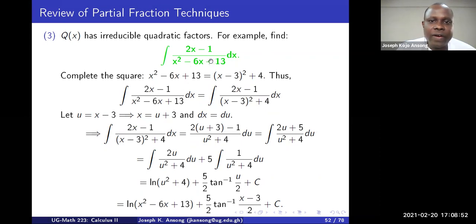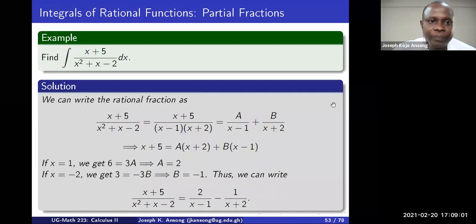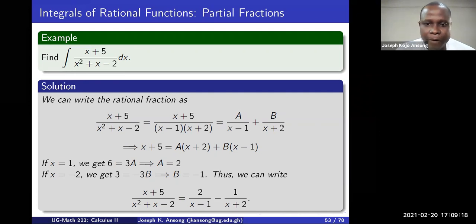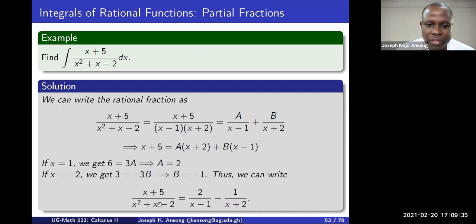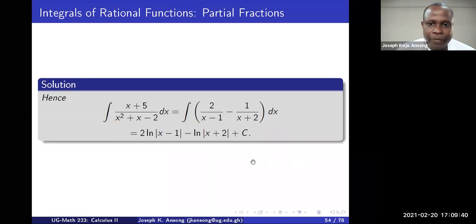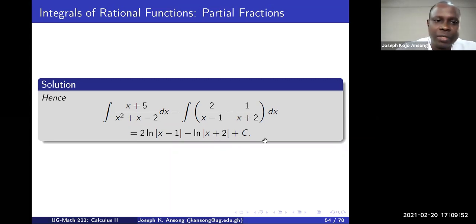If you have irreducible quadratic factors at the denominator, just complete the square and make a substitution. Let's try a simpler example: the denominator has factors (x - 2) and (x + 2), so write it as A over (x - 1) plus B over (x + 2). Multiply through by the denominator and solve — you get A = 2 and B = -1. So the expression becomes 2 over (x - 1) minus 1 over (x + 2), giving 2 ln|x - 1| - ln|x + 2| + C.